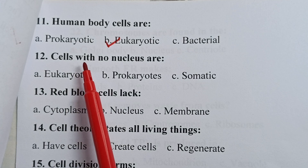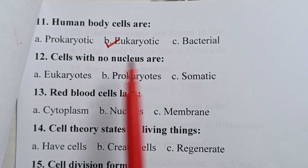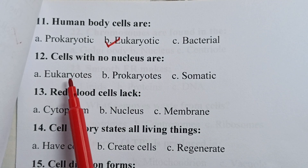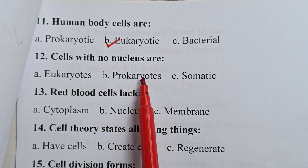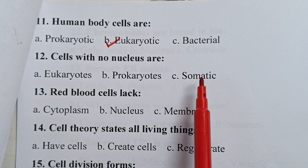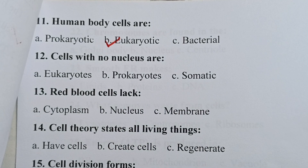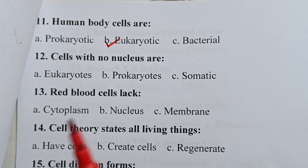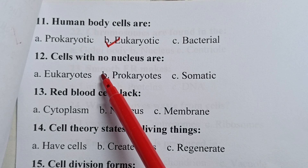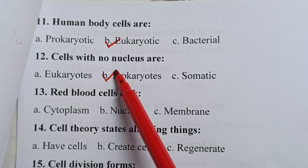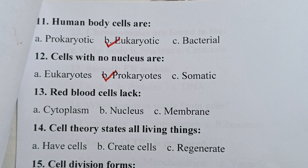Question twelve: cells with no nucleus are — is it eukaryotic, prokaryotic, or somatic? Your correct answer is prokaryotic. Prokaryotic cells are cells with no nucleus.